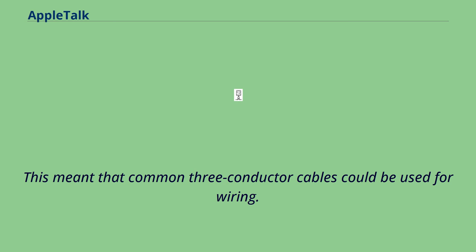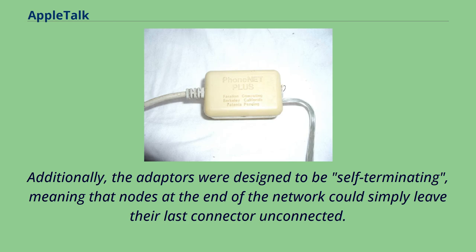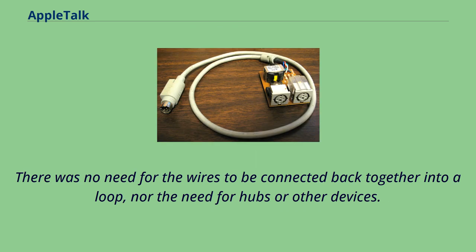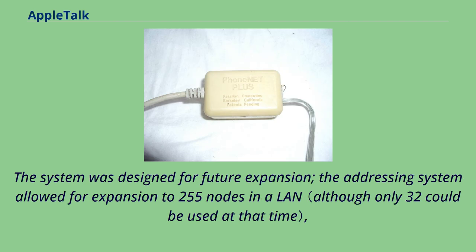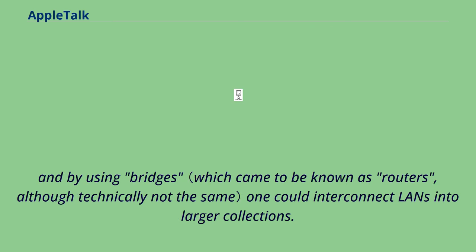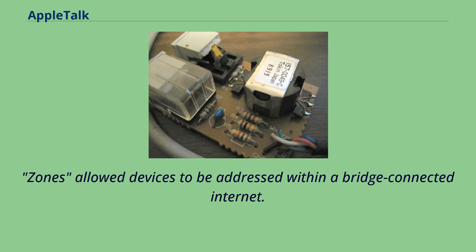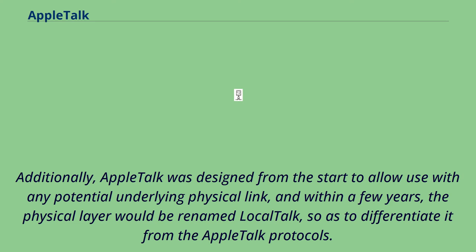The adapters were designed to be self-terminating, meaning that nodes at the end of the network could simply leave their last connector unconnected. There was no need for wires to be connected back into a loop, nor the need for hubs or other devices. The system was designed for future expansion; the addressing system allowed for 255 nodes in a LAN, and by using bridges one could interconnect LANs. Zones allowed devices to be addressed within a bridge-connected internet. Within a few years, the physical layer would be renamed LocalTalk to differentiate it from the AppleTalk protocols.